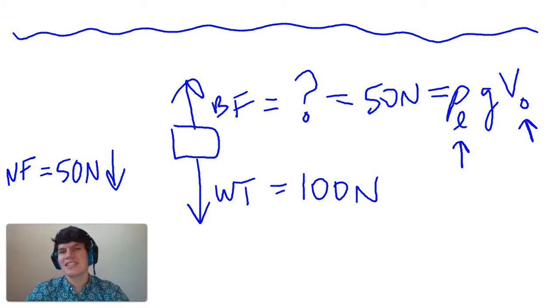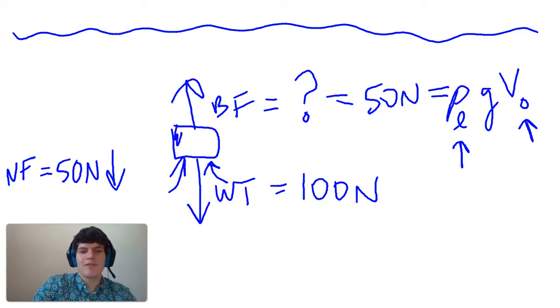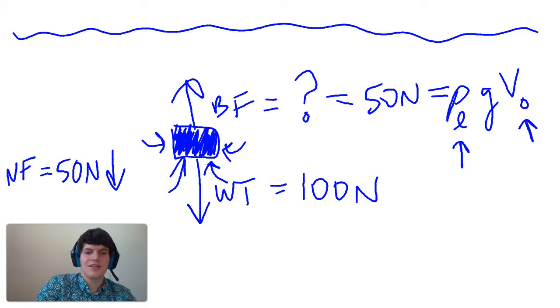Now, why do we use the density of the liquid? Because the thing that is causing this upward force is the fact that this amount of liquid is displaced. So the weight of this displaced liquid is trying to get back to where it once was. It wants to be there, but there's an object in the way.